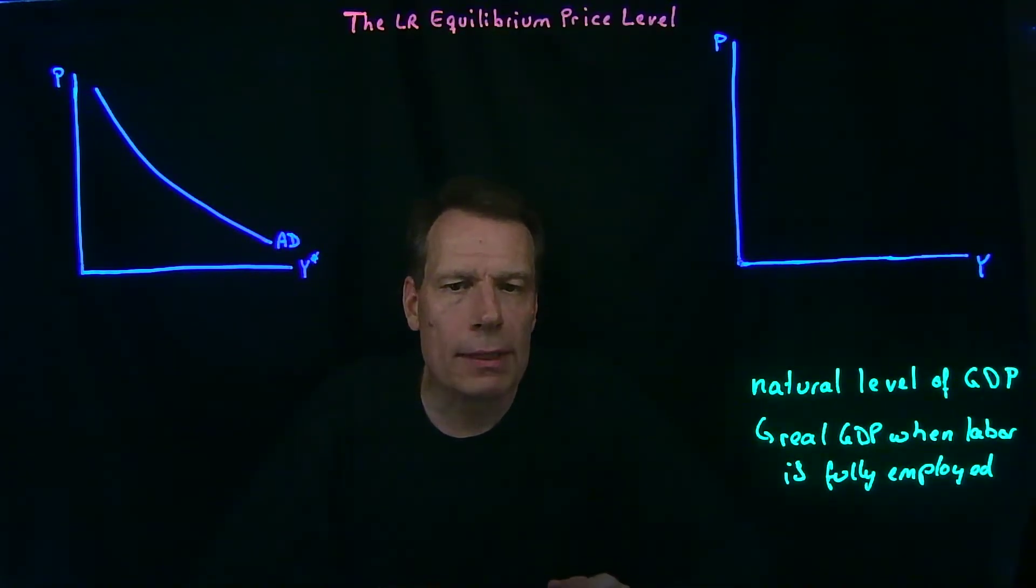But with all that in place, we can ask the question, if labor was fully employed, how much would this economy be able to produce? And that's the natural level of GDP.